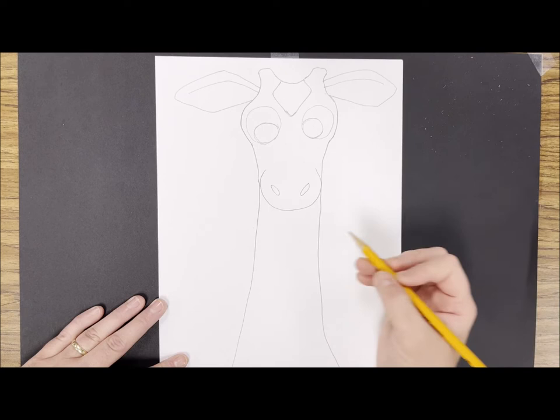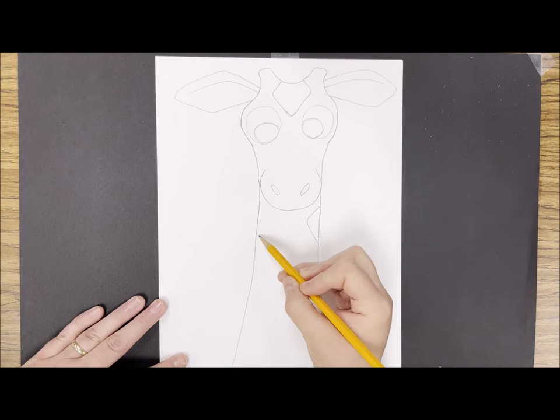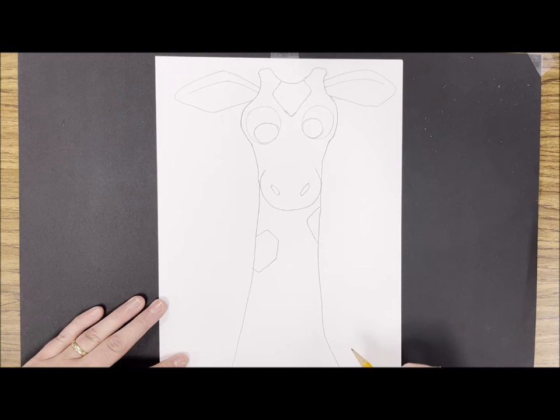Next I'm going to add the pattern to the neck, making sort of a random shape using lines on each side of the neck and the center. I'll fill the neck with that pattern.